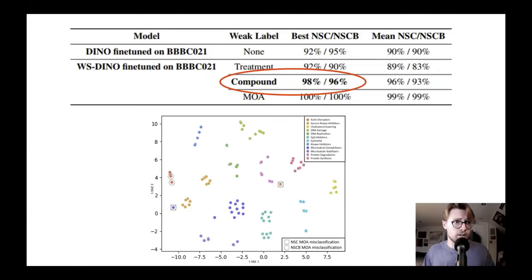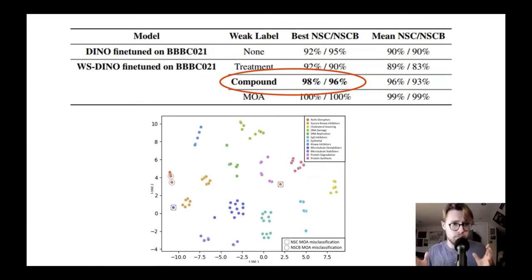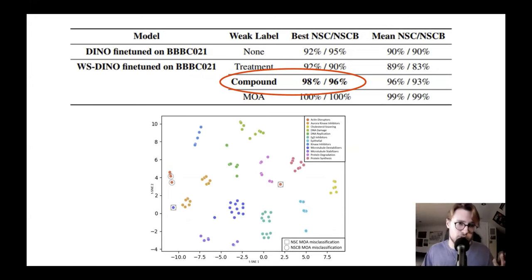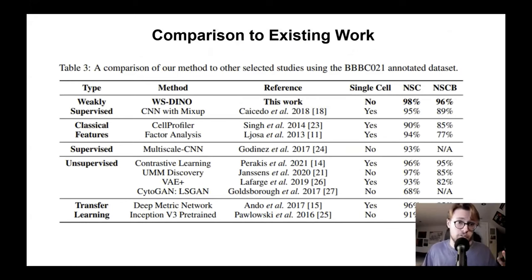We get the best performance using compound as the weak label. We think the reason is that the compound covers multiple batches, whereas the treatment does not — so this may have a batch correction property, which could be really useful in other datasets. We also used mechanism of action as a weak label, even though it's technically the strong label, just as proof of concept, and that performs incredibly well. Compared to existing work, we achieve state-of-the-art level results without using single cell augmentation, which was generally used by the best performing prior results.